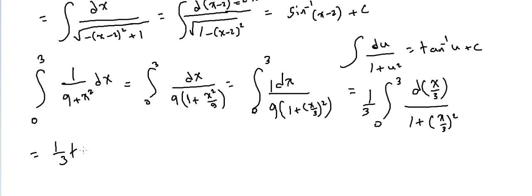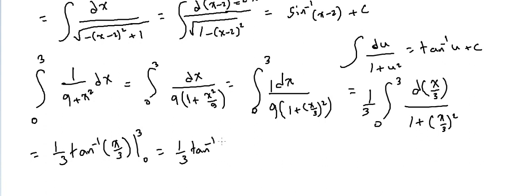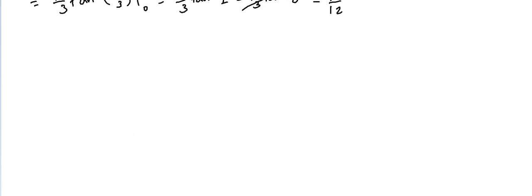The result is (1/3)·tangent inverse of u, evaluated from 0 to 3. Substituting: (1/3)[tangent inverse(3/3) - tangent inverse(0)] = (1/3)[tangent inverse(1) - 0] = (1/3)·(π/4) = π/12.